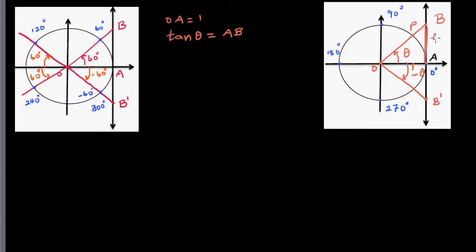So what is tan(0)? When thinking about tan(0), you're asking: what is the length of AB when the particle is at A? When the particle is at A, the angle it has moved is 0, so the length of AB is 0. That's why tan(0) = 0.